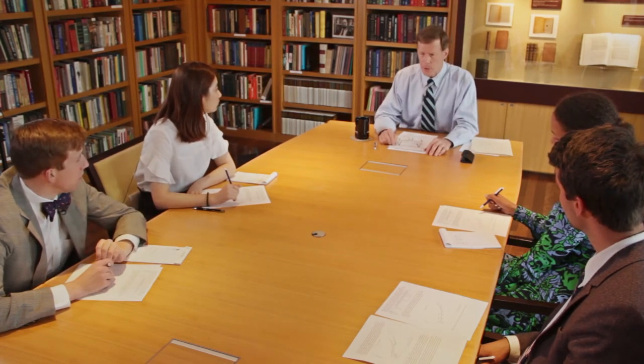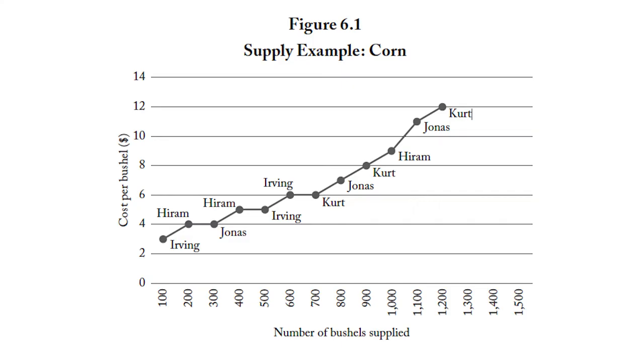How do we represent this complex reality simply? We do it with a supply curve. Like with demand, where we lined up potential buyers according to the most they're willing to pay, with a supply curve we line up potential suppliers according to their cost — from the lowest cost producer to the next lowest, and so on. That's represented in the second figure, which shows the cost of bringing to market each additional hundred bushels.